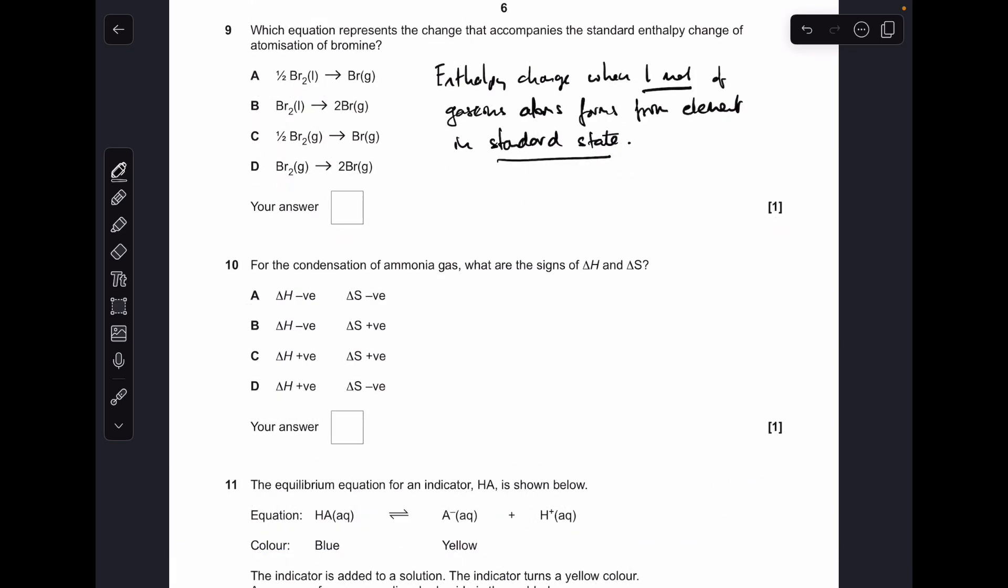Number 9 is testing our knowledge of the definition for standard enthalpy change of atomization. It's the enthalpy change when one mole of gaseous atoms forms from the element in its standard state. We can rule out B and D because two moles of gaseous atoms are formed. We're down to A and C. The other thing it's testing is do we know the standard state of bromine? It is a liquid. So A was the answer.